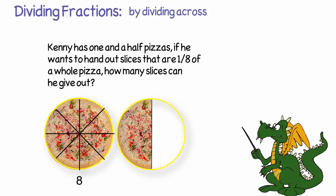Then we will take the half pizza and divide it into the same size pieces. As you can see, it looks like we will be getting four slices out of that pizza. So in all, there will be twelve slices of pizza that are an eighth in size.